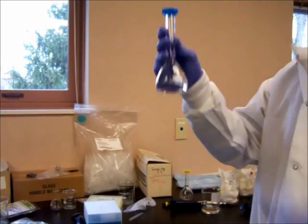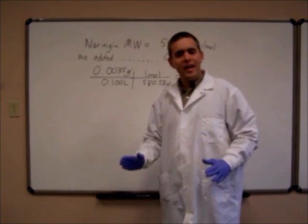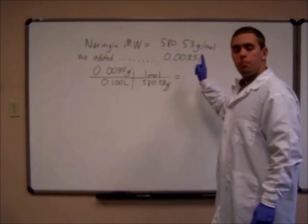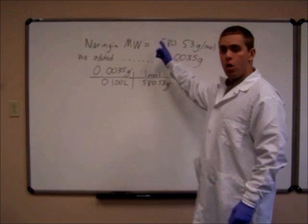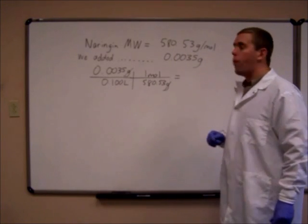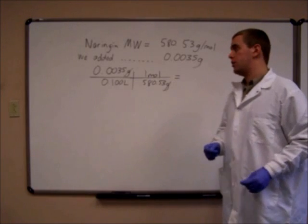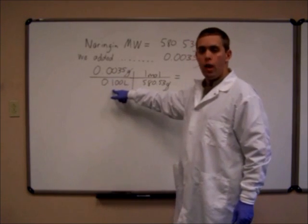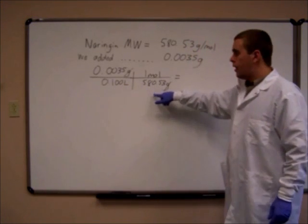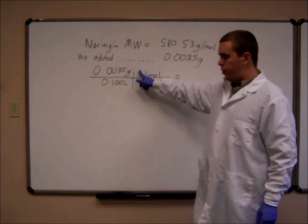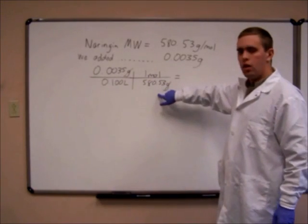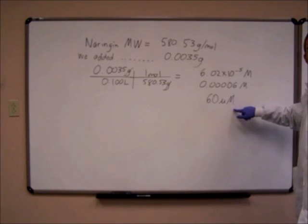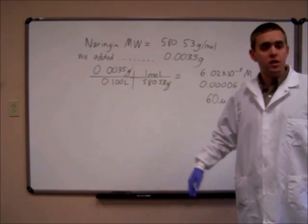So now we have our mixture ready to go right here. So now we've got to figure out just exactly how much naringenin we added to our volumetric flask. To do that, we know that we added 0.0035 grams of naringenin to the flask. We also know the molecular weight of naringenin, that's 580.53 grams per mole. Now putting it into this equation, we added 0.0035 grams to 0.1 liters or 100 milliliters. Dividing the 0.0035 by the volume of the flask and by the molecular weight gives us 6.02 times 10 to the negative fifth moles or 60 micromolar.